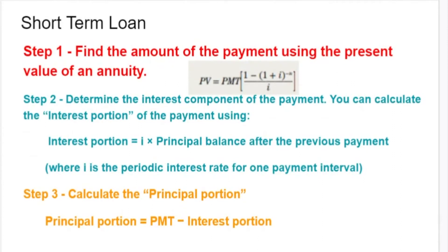We make that payment, and that payment consists of two individual components: the interest component and the principal component. Let's say it's a 60-month loan — we're paying it off over 60 months, paying monthly. Every single month we pay $300. But every single month, the amount of interest that is built into that $300 goes down. As we pay the loan off, there's less and less principal, so there's less and less interest. And the amount of payment that goes toward repaying the actual loan itself goes up.